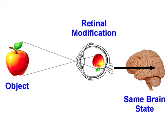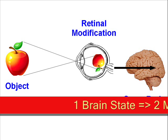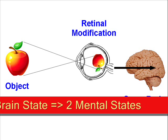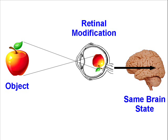How is it that we distinguish between the idea of our retina being modified and the apple modifying our retina? This is a mystery because there is one physical state with two mental states corresponding to it. The same brain state that represents the modification of our retina also represents the apple. That means, once again, that brain states and ideas cannot be the same thing. Thank you for watching, and please leave comments.